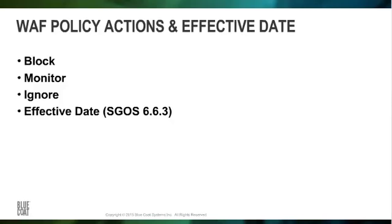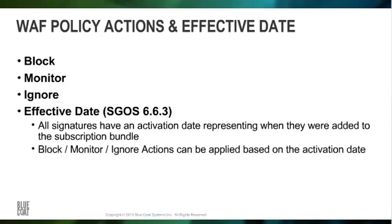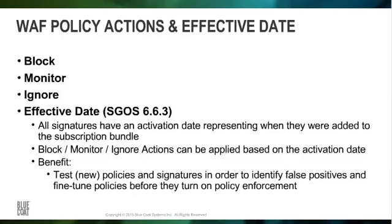The effective date feature, available in SGOS 6.6.3, is related to the signature-based engines. All signatures have an activation date, which you can use to write policy. For example, you could run all signatures from December 1, 2015 in block mode. If an update was released January 1, 2016, you could run all the newer signatures in monitor mode, which would allow you to test new policies and signatures to identify false positives and fine-tune policies before turning on policy enforcement, application by application.